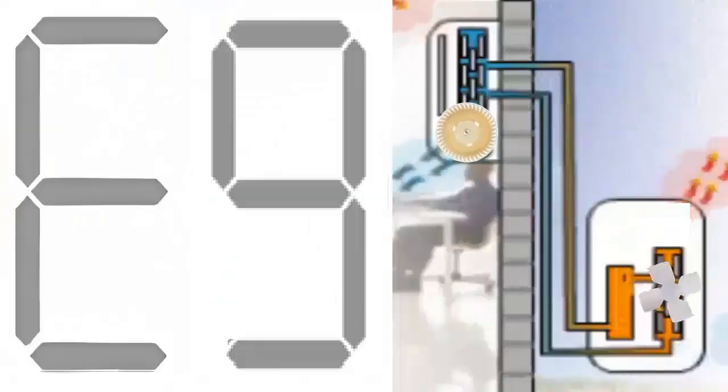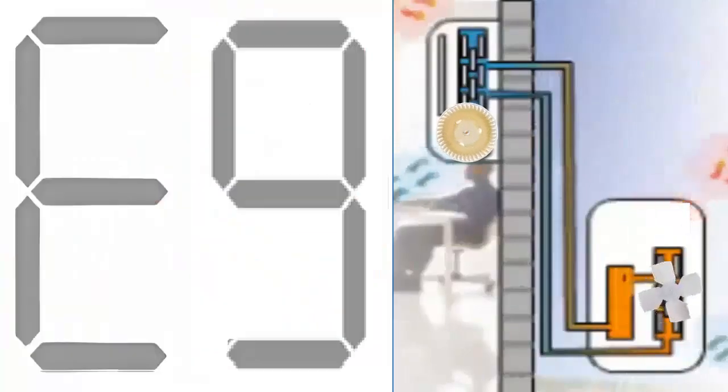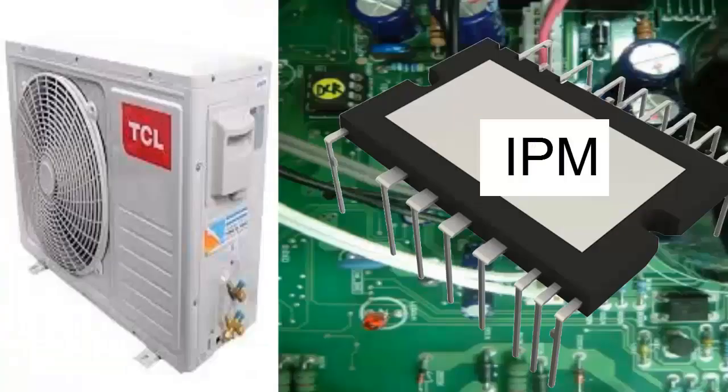The E9 error code on TCL air conditioners is associated with issues in the control electronic board located in the outdoor unit.